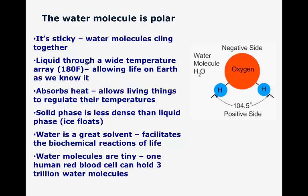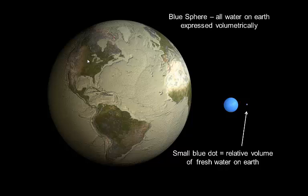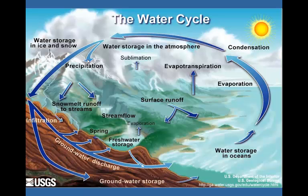Water molecules are tiny — one human red blood cell can hold three trillion water molecules. And although we live on this watery planet, the irony is that most of the water on the planet is not easily available for our use. Still, the amount of available fresh water is a tremendous resource. Water is not static like other natural resources such as coal or other fossil fuels. Water is in motion, driven around the globe by solar energy — it captures and moves solar energy. And the result is purification, renewal, variability, and the extremes that we see in water.